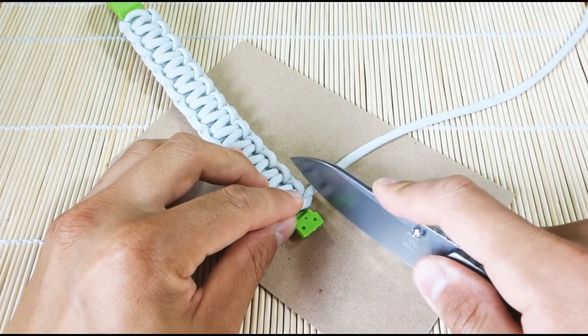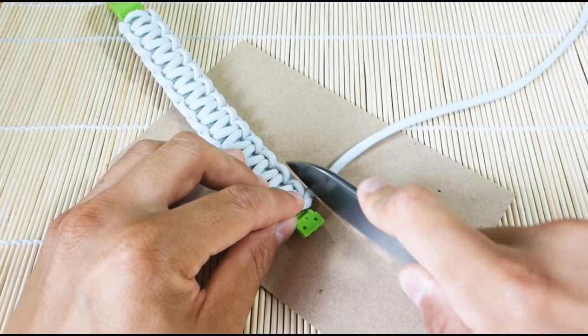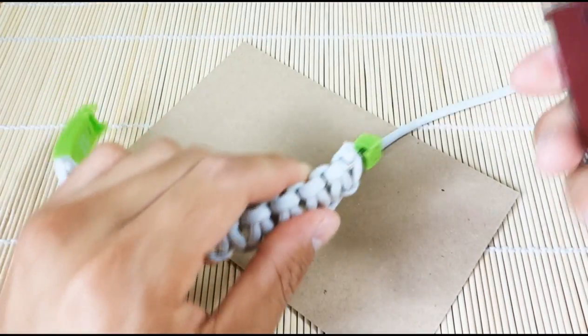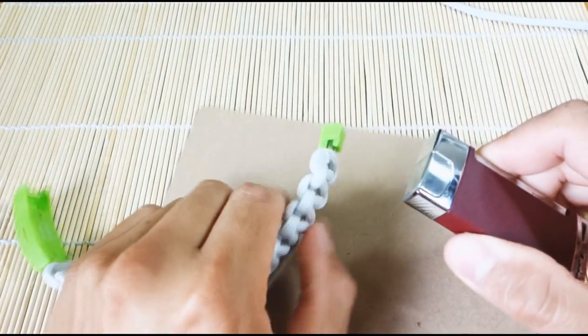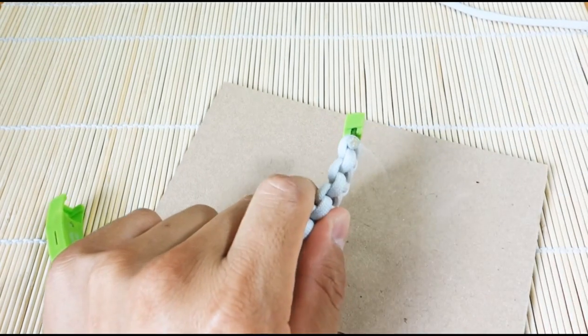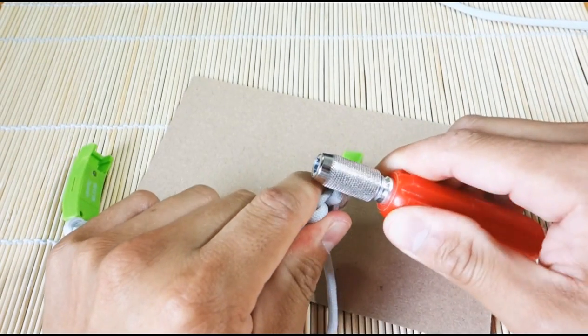So again, you don't want to cut too close. Cut right about there. Take my lighter. Melt, and then I'm going to press it with my tool.